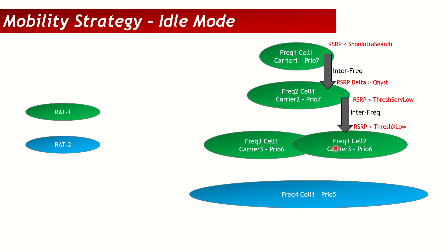For intra-frequency reselection between two cells on the same frequency and same priority, only q-hysteresis needs to be fulfilled — s-non-intra-search does not apply. So if the target cell becomes better than the serving cell by the value of q-hysteresis, say 2 dB, the user will reselect to that cell.